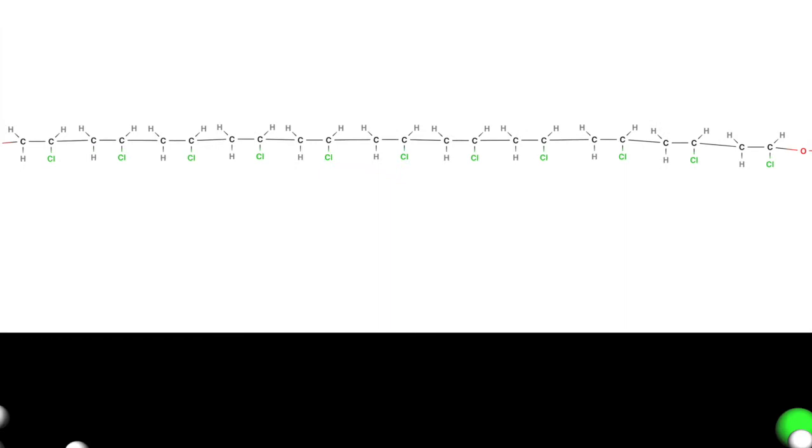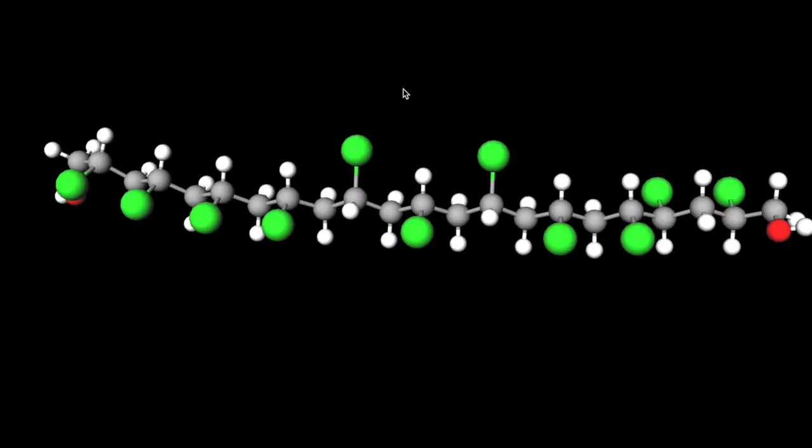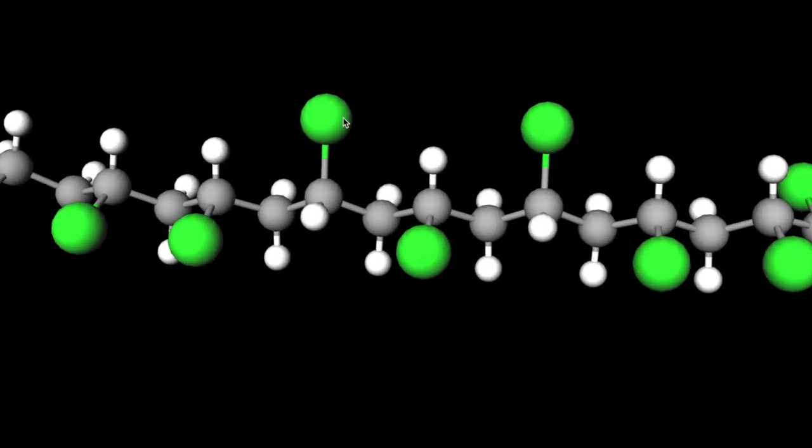If we look down at the 3D ball and stick models, we can see that the chlorine atoms are oriented randomly along the chain. It is also noticeable that the chlorine atoms stick out from the chain and are very large.